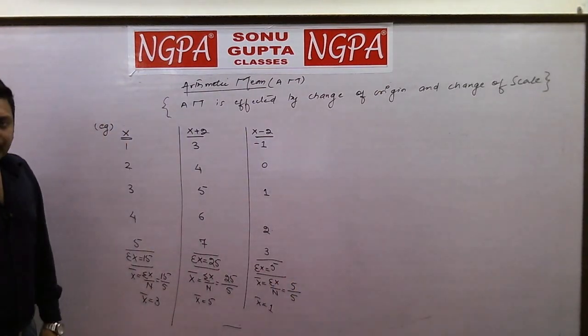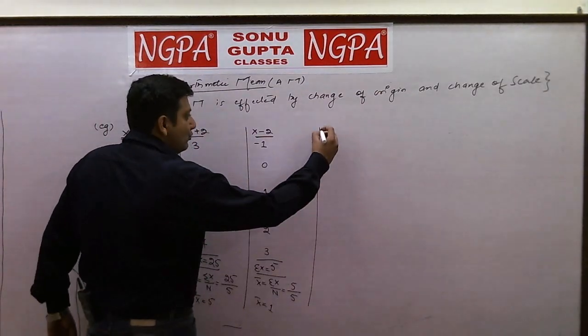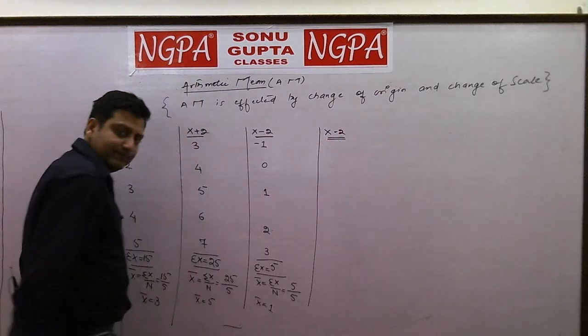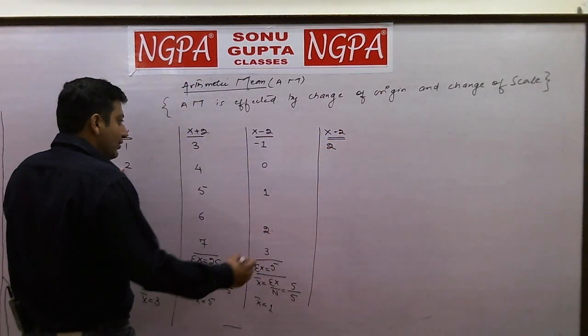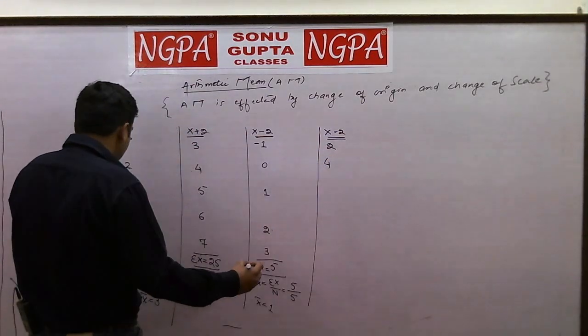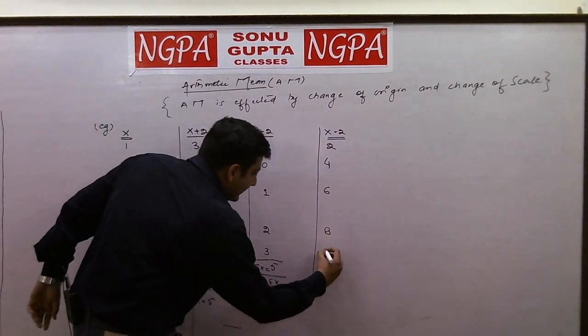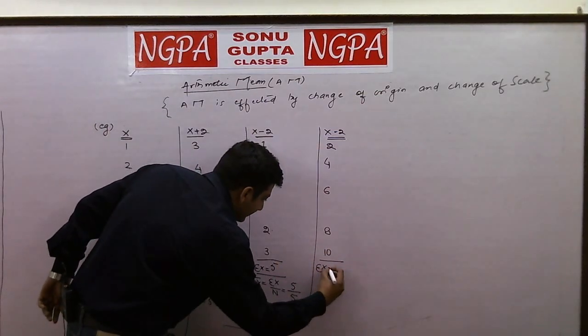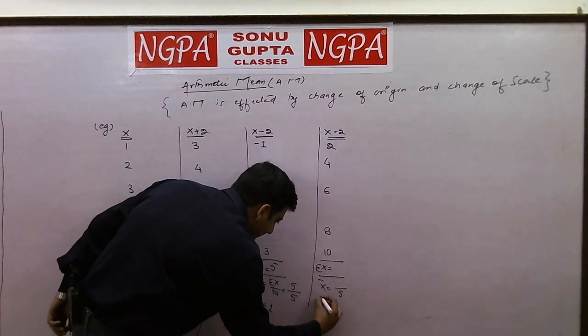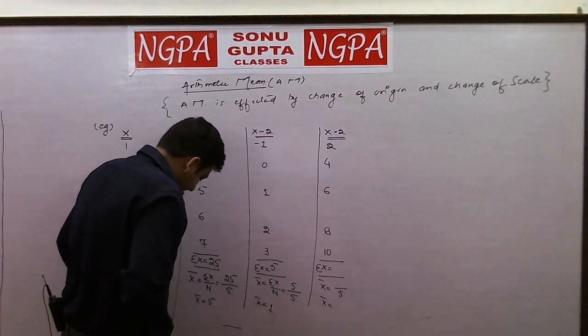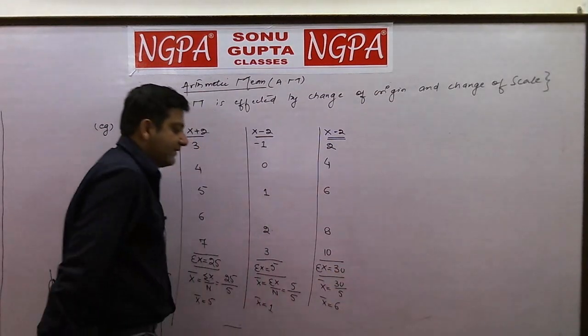So when we added 2 and subtracted 2 from every value, let's try multiplying by 2 and see what happens. 1 into 2 is 2, 2 into 2 is 4, 3 into 2 is 6, 4 into 2 is 8, and 5 into 2 is 10. Again, sigma x divided by n, x-bar. Number of items will again be 5. This is 30 by 5, that is 6.